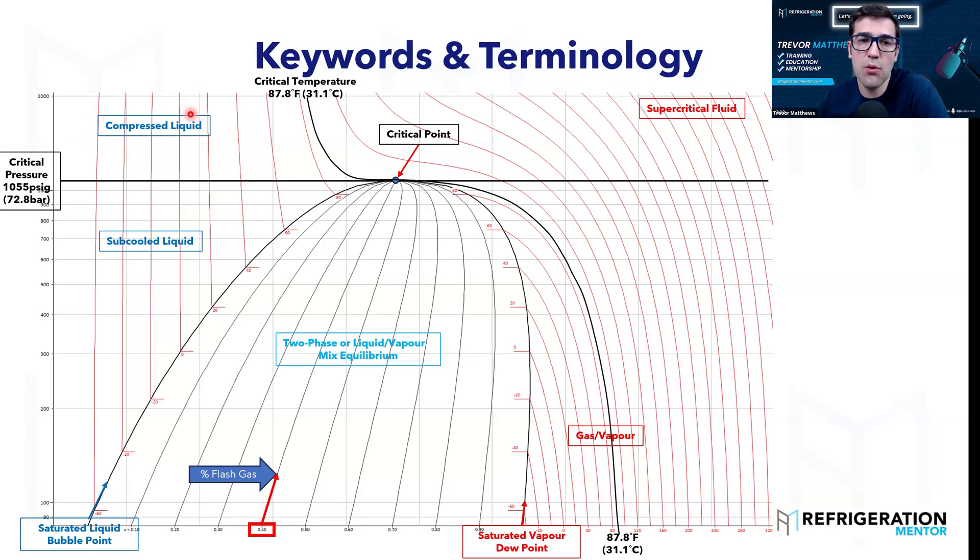So these are some of the important things in key words. We got the supercritical fluid. We got critical point. We got critical temperature and pressures. We got saturated vapor, saturated liquid. Really, none of these are new terms probably besides like maybe the critical point and maybe a supercritical fluid. But if you've been in CO2 for any length of time, you've probably heard those terms before.